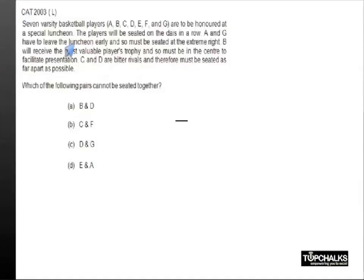We use the same type of conditions as the previous case. There are 7 seats, and A and G have to be at the extreme right. B has to be right in the middle.